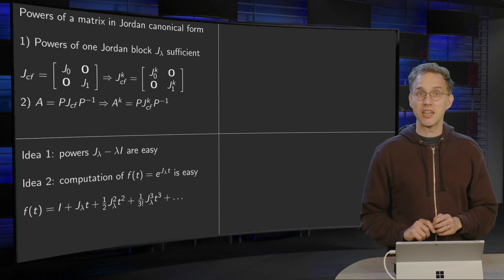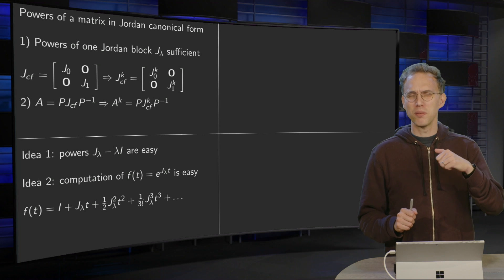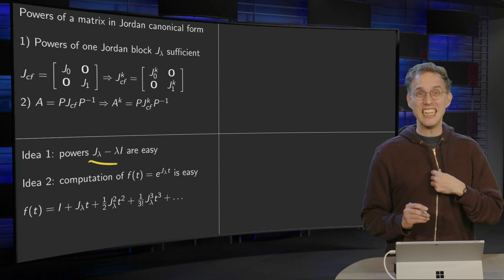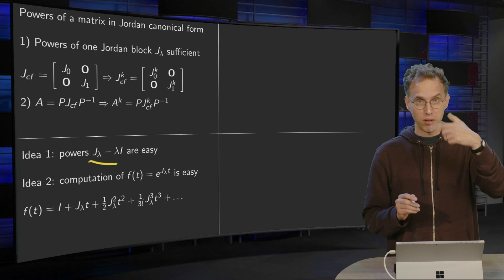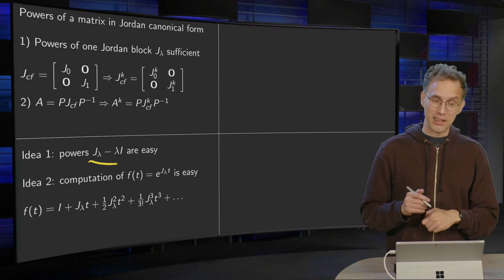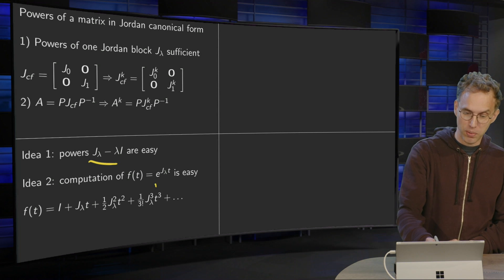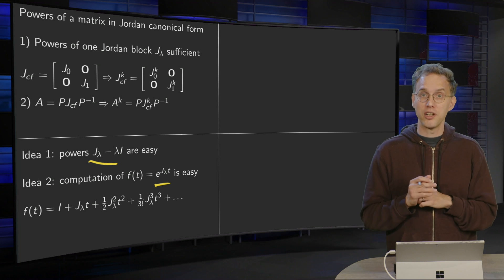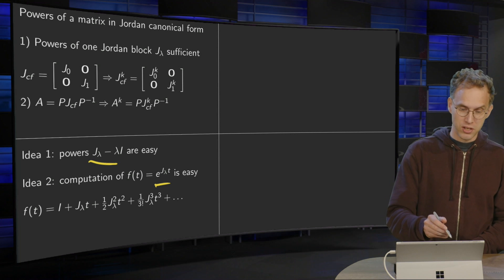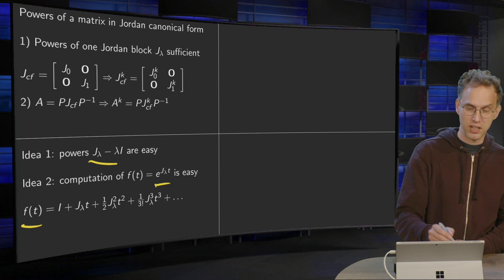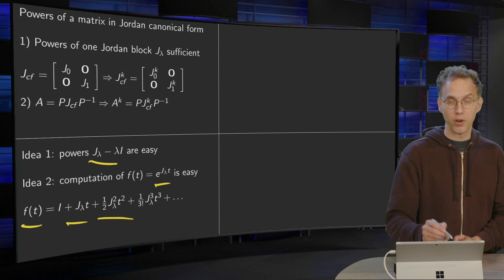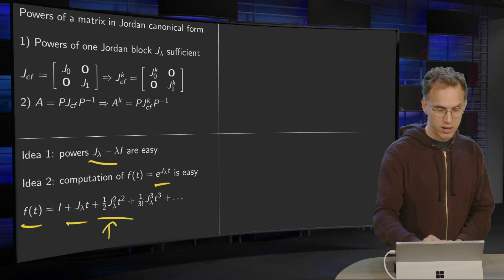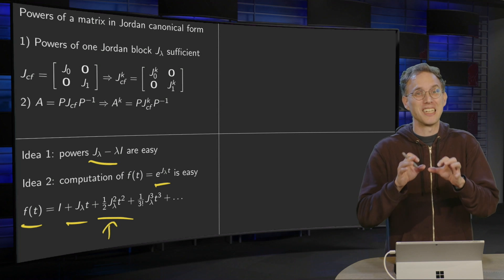Now let us take a look at the basic idea. Computing powers of J_λ itself is difficult, but if you take J_λ minus λI then it is easy, because it will become a zero matrix at a certain point. The second idea is that the computation of e to the power J_λ t is easy. So we define this as the function f(t) equals the identity plus J_λ t plus one half J_λ squared t squared, and so on. So all the powers of J_λ are somewhere in f(t).